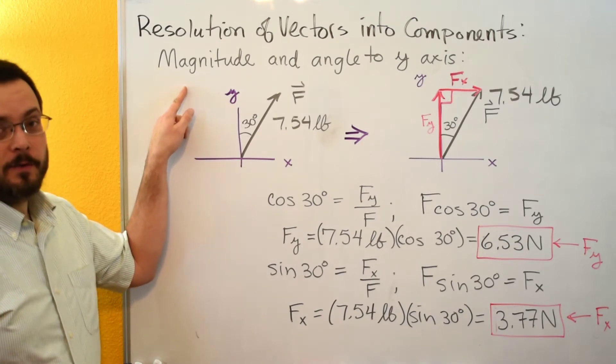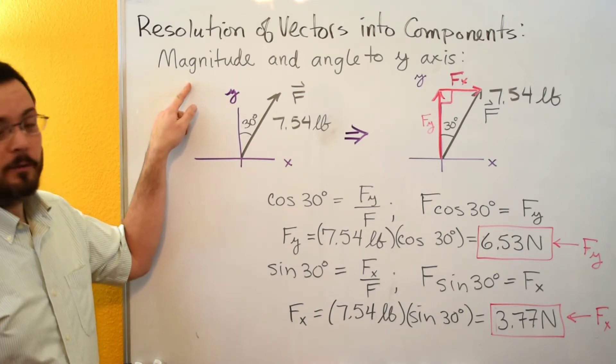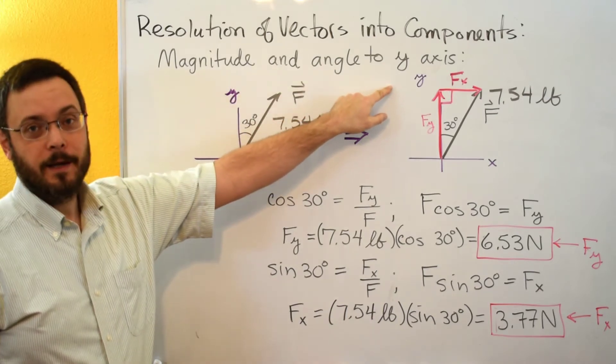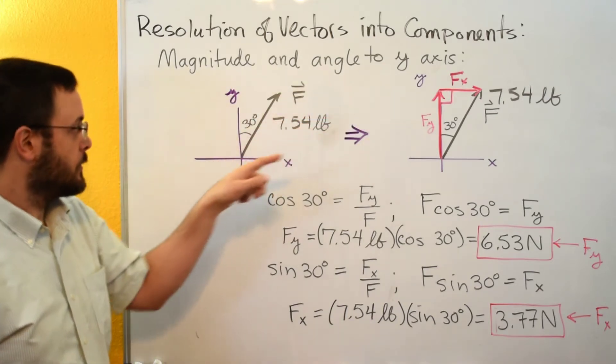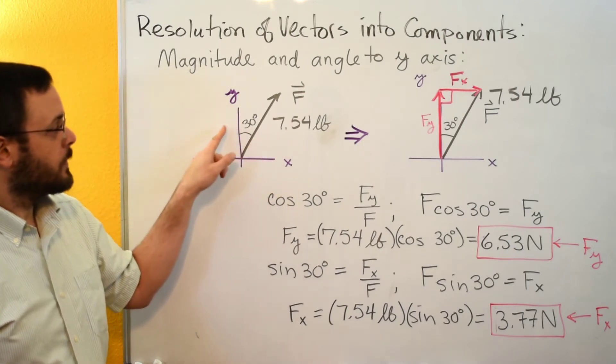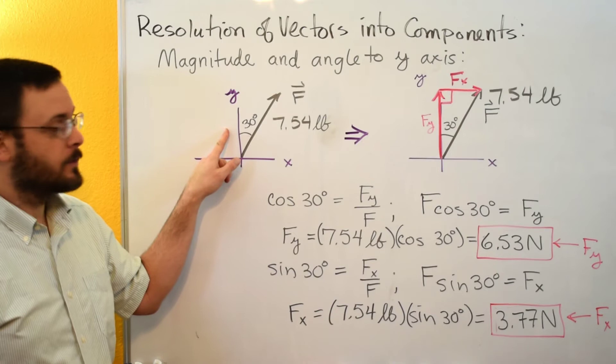This time though we have a vector where we have a magnitude but the angle is to the y-axis instead of the x-axis. So here's our vector 7.54 pounds with an angle of 30 degrees to the y-axis.